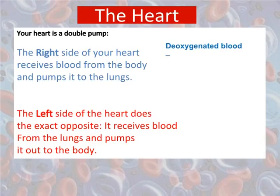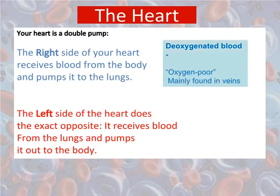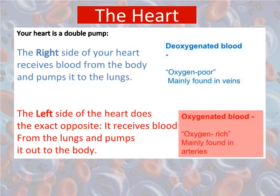The right side of the heart receives deoxygenated blood from the body and pumps it to the lungs — also known as oxygen-poor blood, mainly found in veins. The left side receives oxygenated blood from the lungs and pumps it out to the body — also known as oxygen-rich blood, mainly found in arteries.